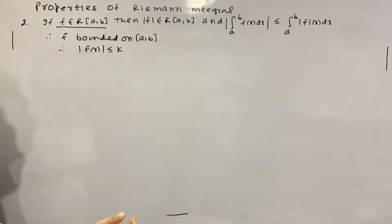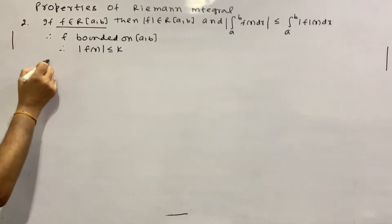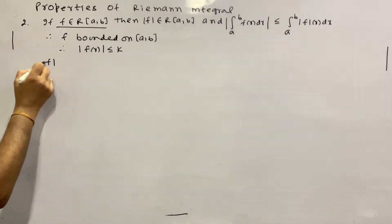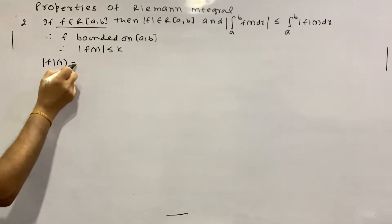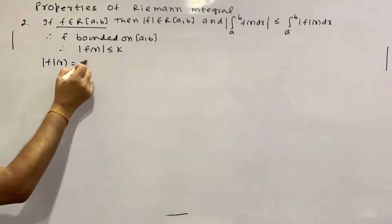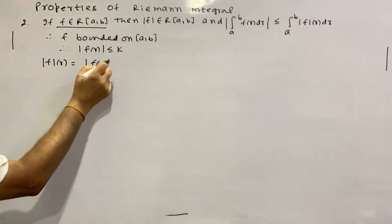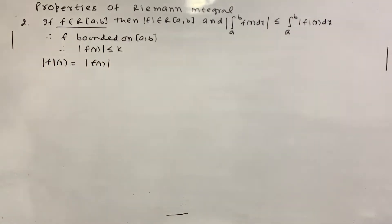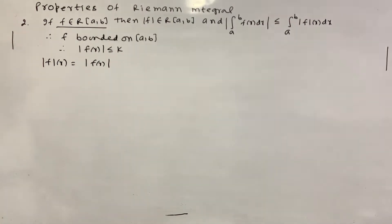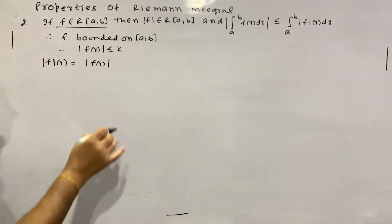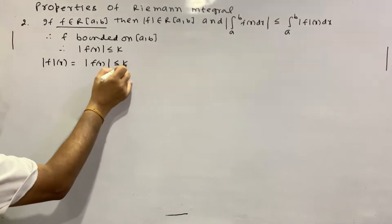What do we need to prove? First we need to prove that |F| is bounded. We write |F(x)| — what do we call this? |F(x)| is less than K. So |F| is bounded.